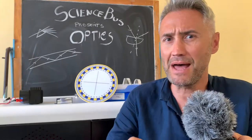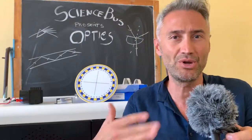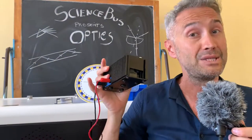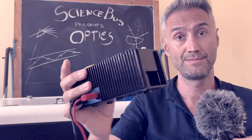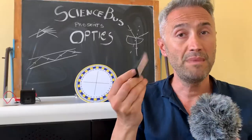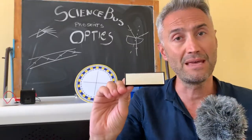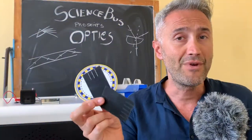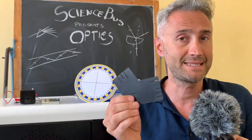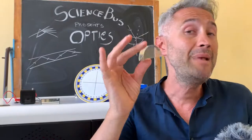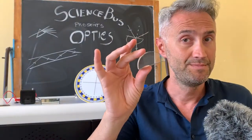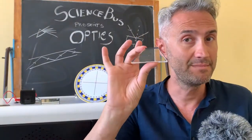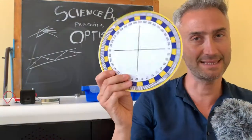Let's take a look at the materials we are going to use: a light source, a mirror with a plastic frame, a diaphragm with a series of slits, a plain convex prism, a trapezoid prism, and a goniometric disc.